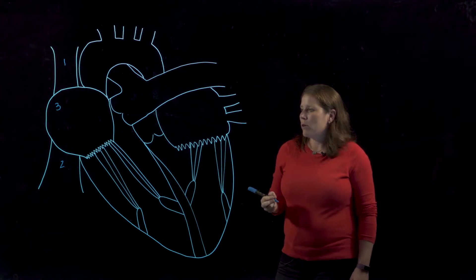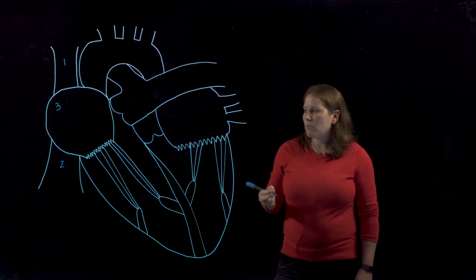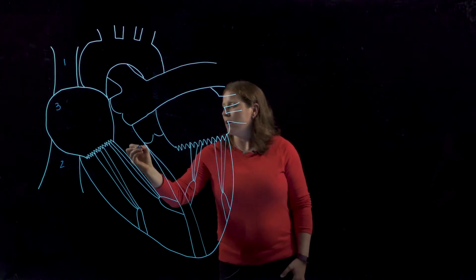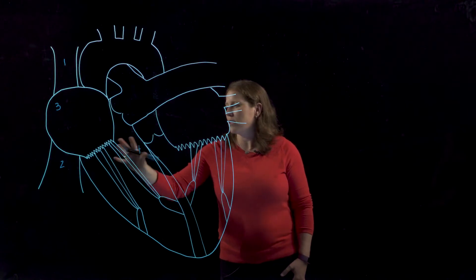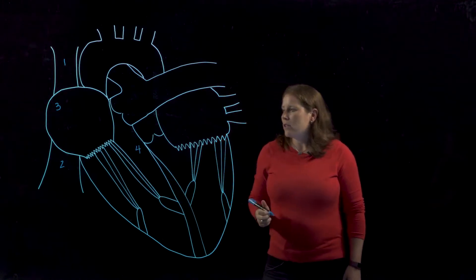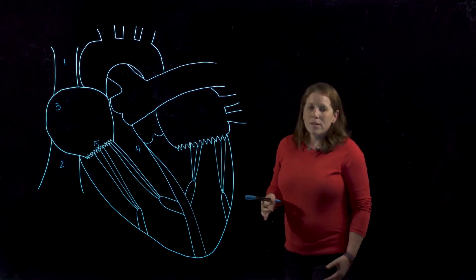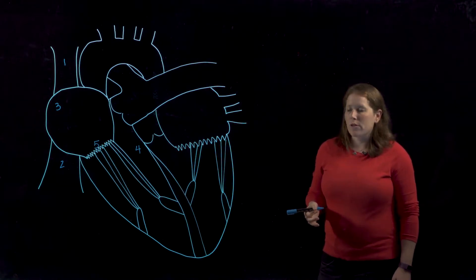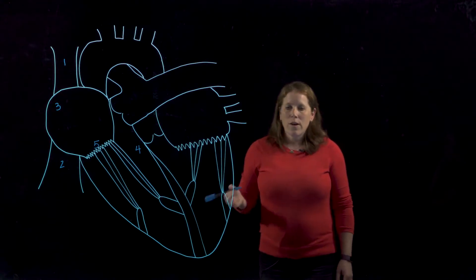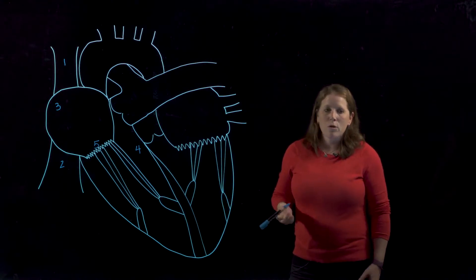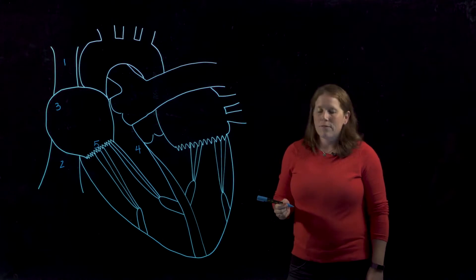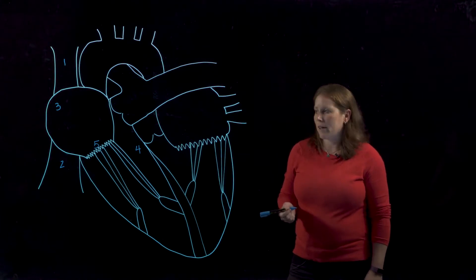Now the right atrium upon contraction will pass blood into the right ventricle, this space here, and it does so through this valve which we can call very simply the right atrioventricular valve. Now this valve also has an alternate name that you are responsible for and this valve can also be called the tricuspid valve.